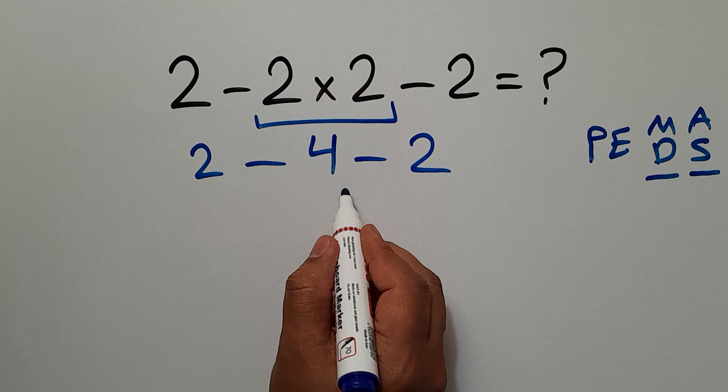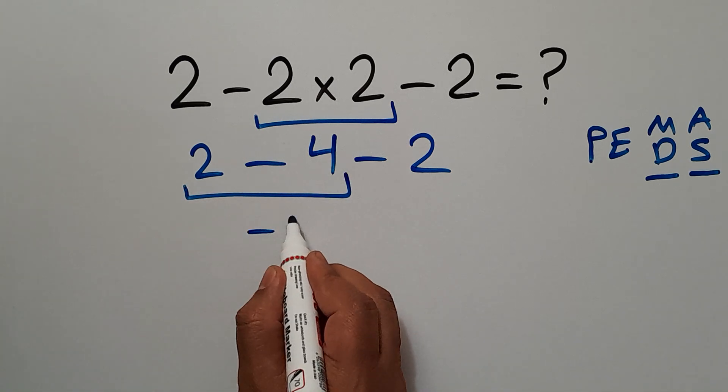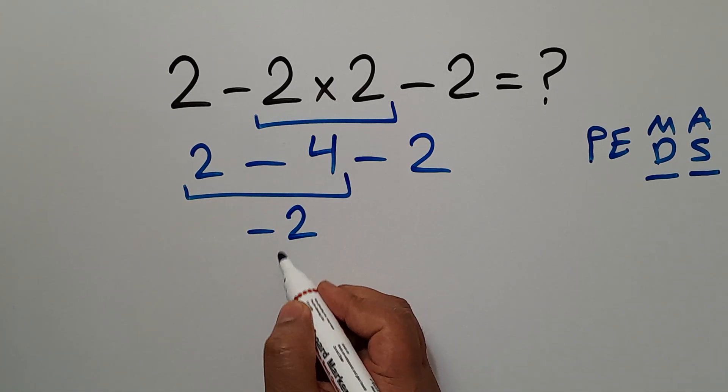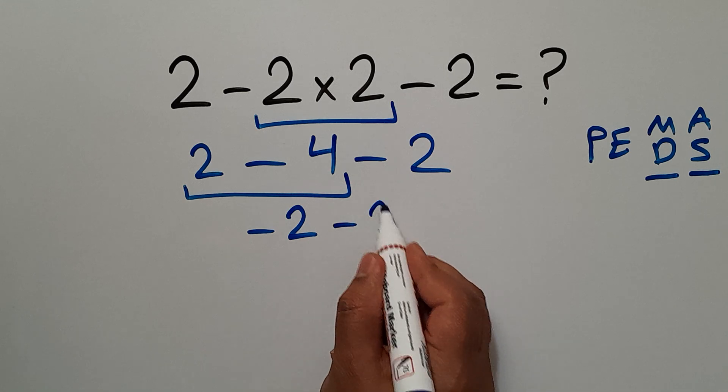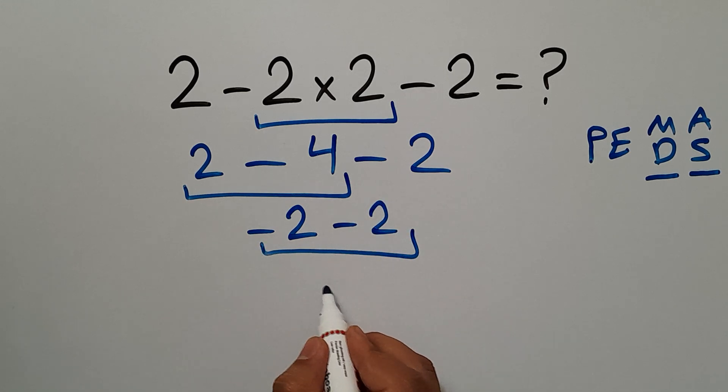2 minus 4 gives us negative 2. So, negative 2 minus 2, which equals negative 4. So, our final answer to this problem is negative 4.